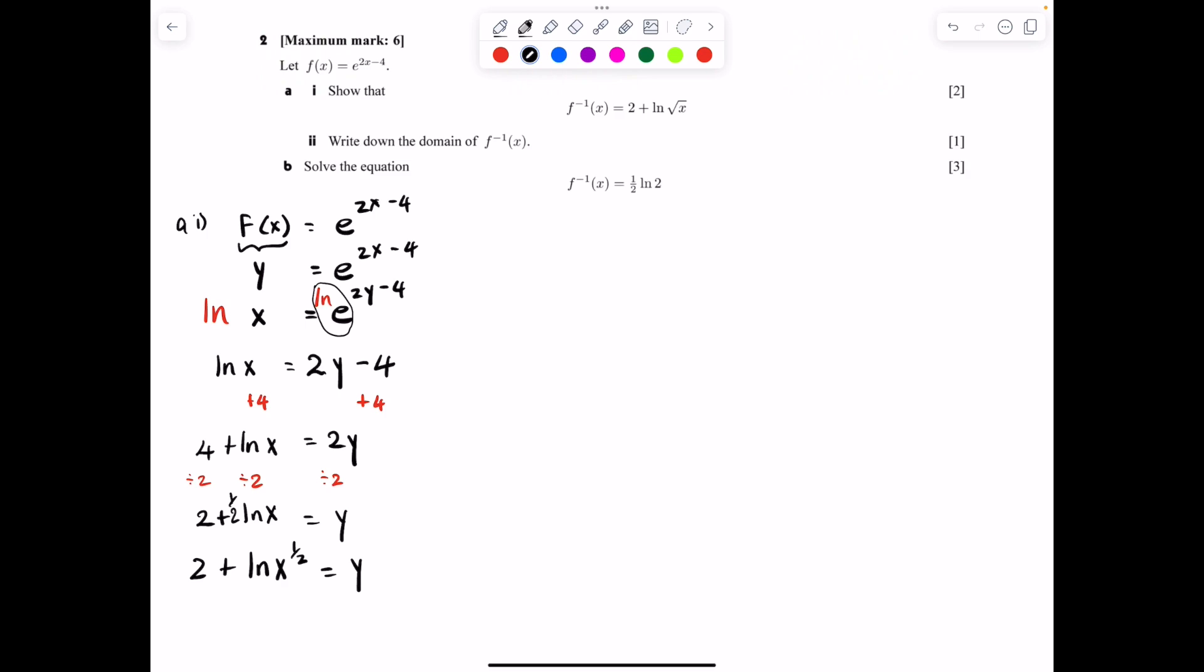And so finally, if you look at what you want it to look like here, if you remember that anything to the power of a half is really just the square root of that thing, then you realize you are actually done. It's 2 + ln√x = y. And that's exactly what we have in the first part of the question.